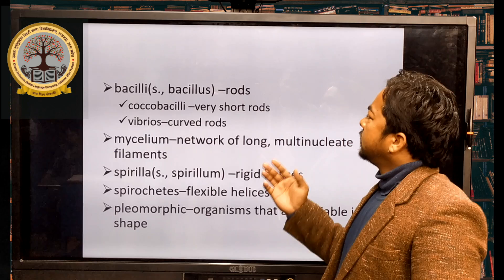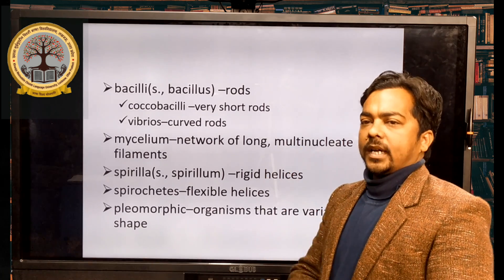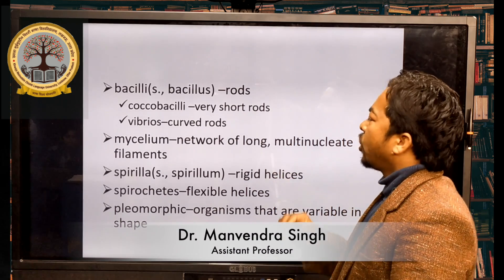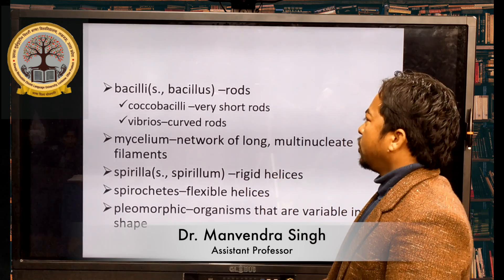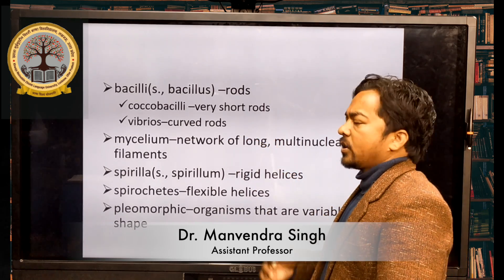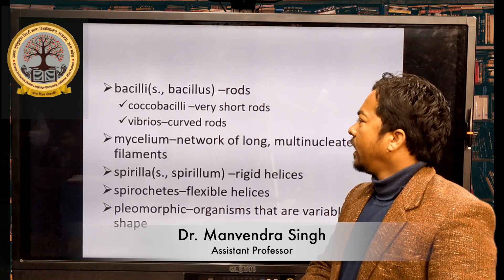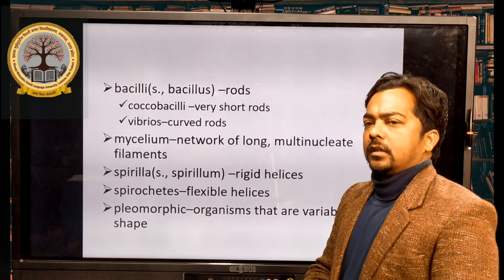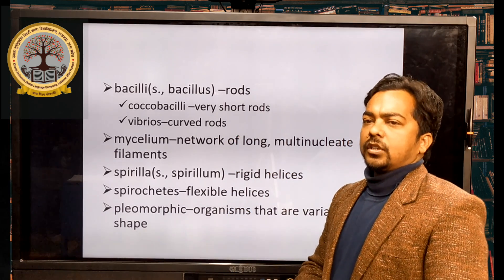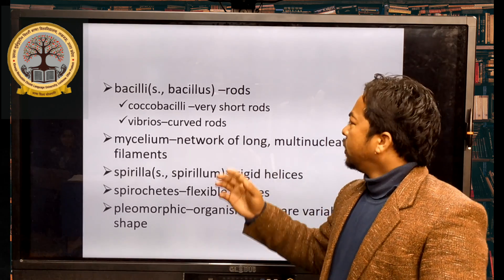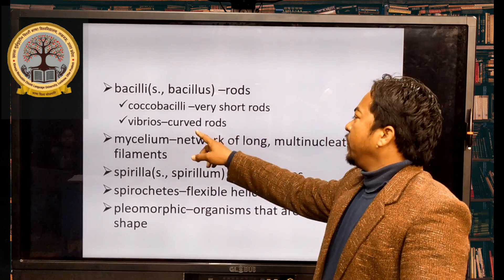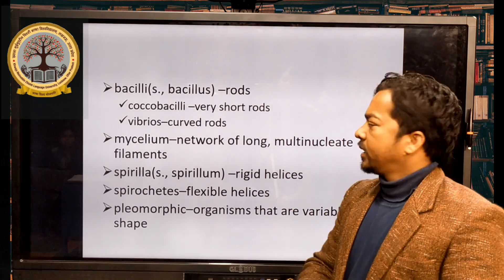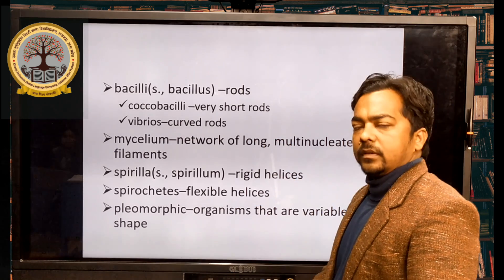Bacillus: in the last topic we discussed cocci, which means spheres. Now bacillus means rods — rod-shaped bacteria or prokaryotic cells, known as bacilli. Coccobacilli are very short rods. Vibriose are curved rods, also known as comma-shaped. For example, Vibrio cholerae is included in vibriose. Mycelium is a network of long, multinucleate filaments. These are arrangements of cells.